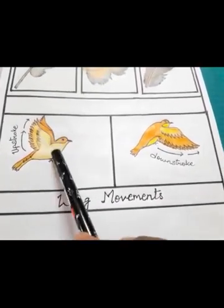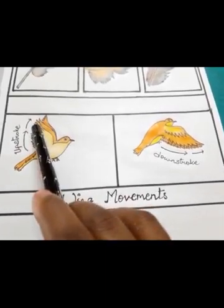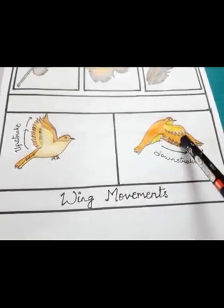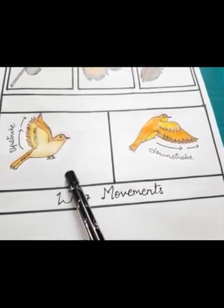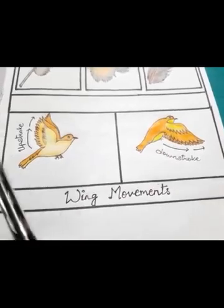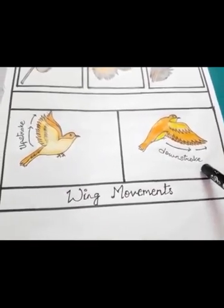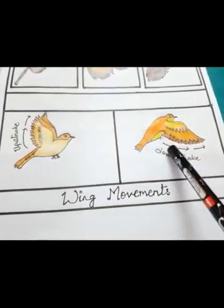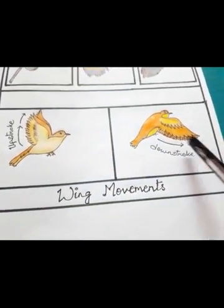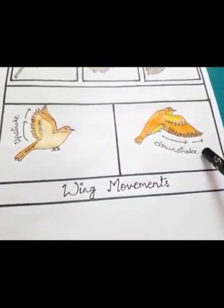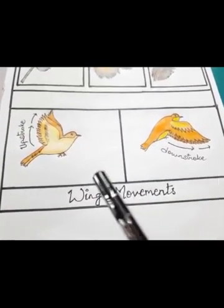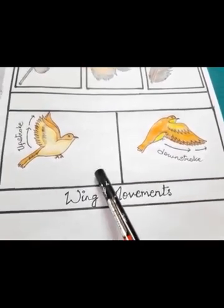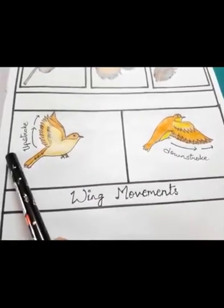While flying, a bird moves its wings upwards and downwards. The movement of the wings is of two types: up stroke and down stroke. Up stroke is the upward movement and down stroke is the downward movement.